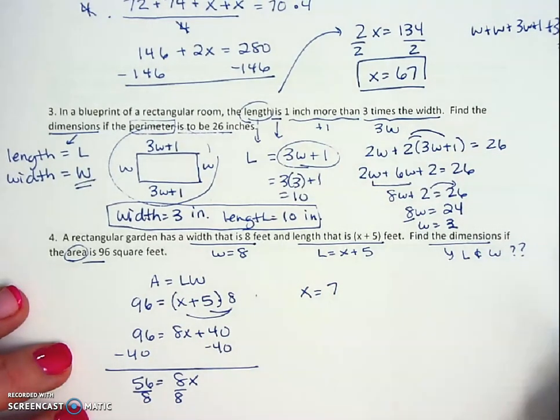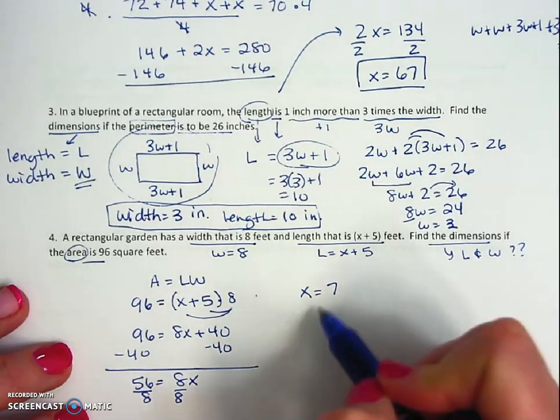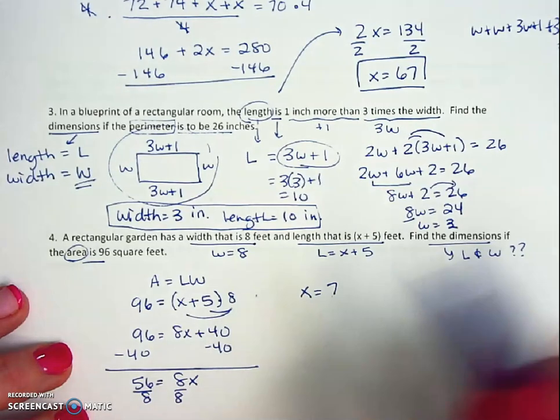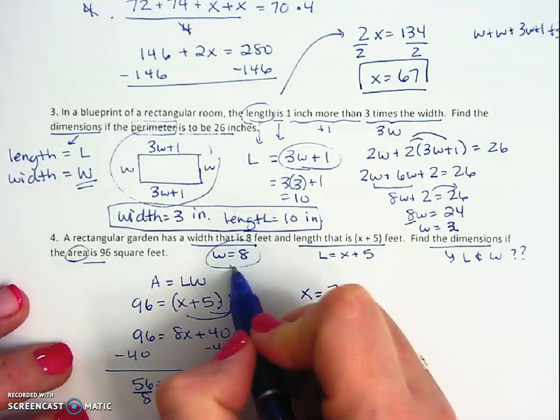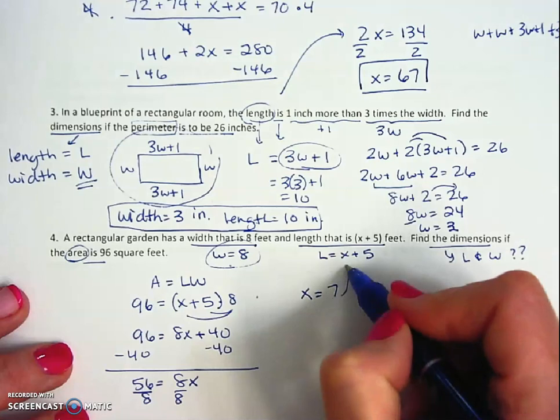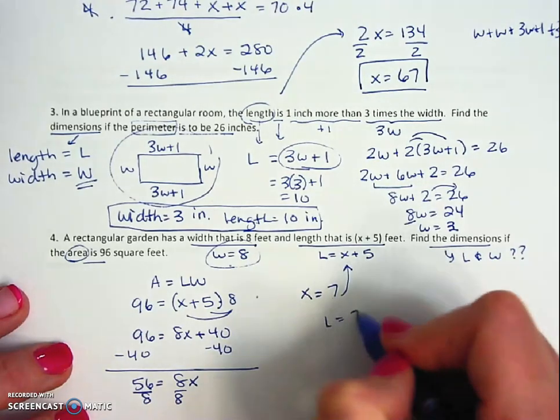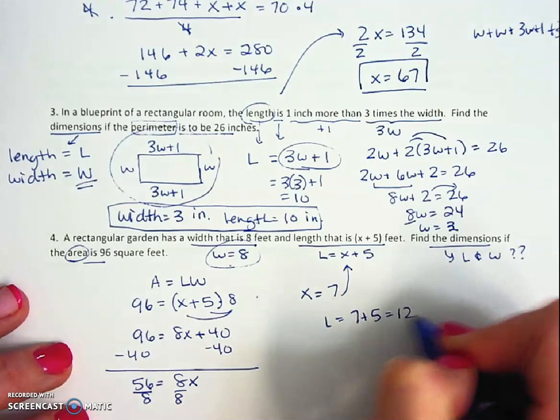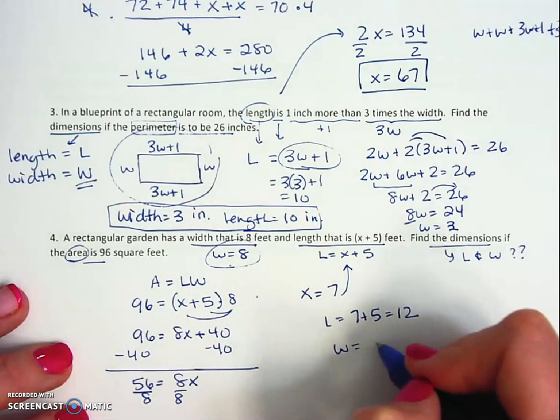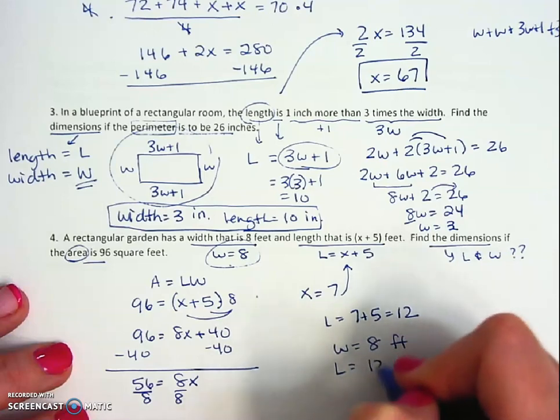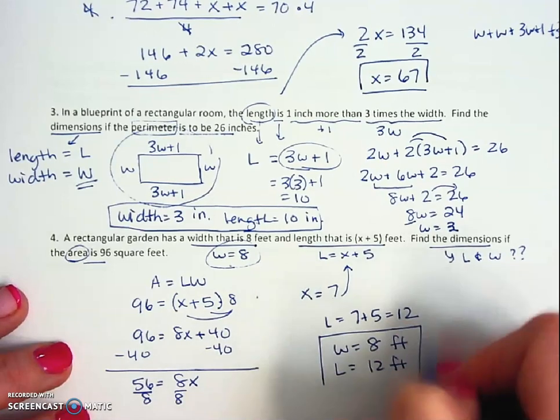Now we're looking for length and width, and all we found was the x value. Well, I already know the width is 8, but the length now I have to plug that 7 in for the x. So the length is 12, so the width is 8 feet and the length is 12 feet.